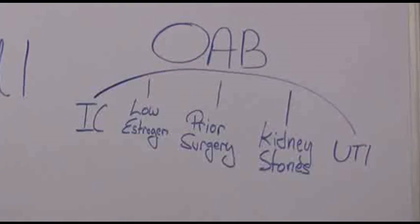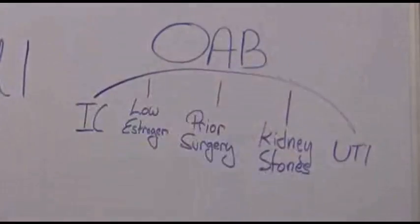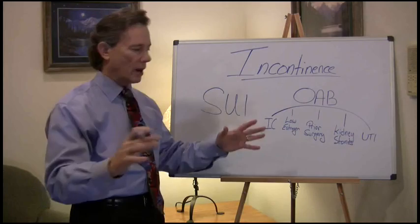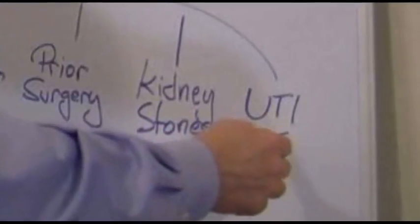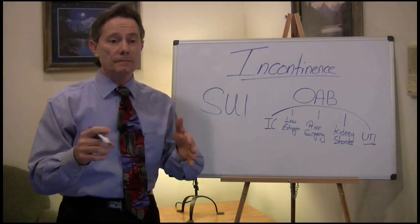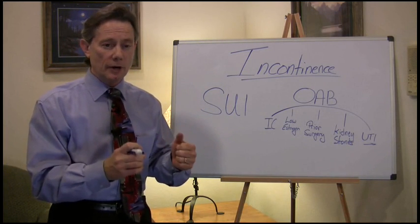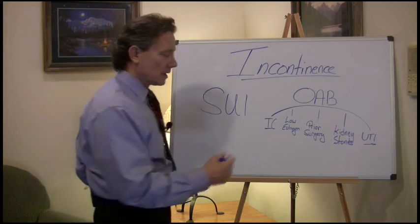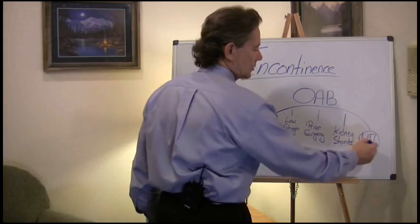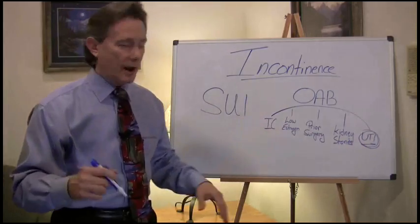OAB stands for overactive bladder. When we talk about overactive bladder, there are multiple different things that can cause it, so it's kind of an umbrella. One of the things that can cause overactive bladder is a urinary tract infection. When you get an infection and go to your doctor, you know you have some urgency, some frequency, and you may even have some pain. Once you get a urinalysis and it shows bacteria, we've diagnosed a urinary tract infection.